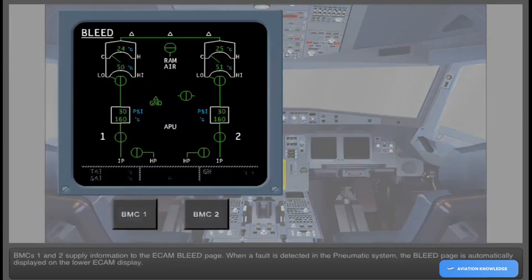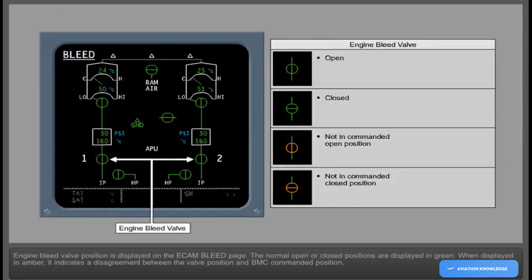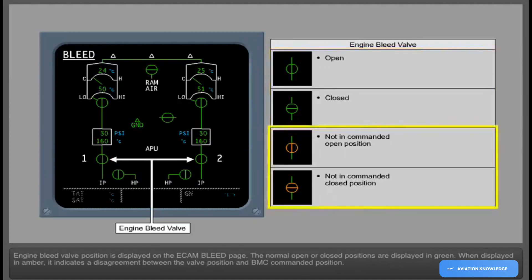The BMCs 1 and 2 supply information to the ECAM bleed page. When a fault is detected in the pneumatic system, the bleed page is automatically displayed on the lower ECAM display. Engine bleed valve position is displayed on the ECAM bleed page; the normal open or closed positions are displayed in green. When displayed in amber, it indicates a disagreement between the valve position and the BMC commanded position.